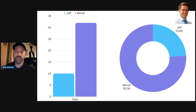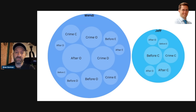The bar chart on the left shows total events: Jeff had 10 and Wendy had 32 — a significant difference. In the donut chart, I've totaled the events between the two. There are 42 total events, and of those 42, Wendy has 76.2% of that share, whereas Jeff holds 23.8%. In the bubble chart, with Wendy's 32 events, her bubble is much larger than Jeff's.